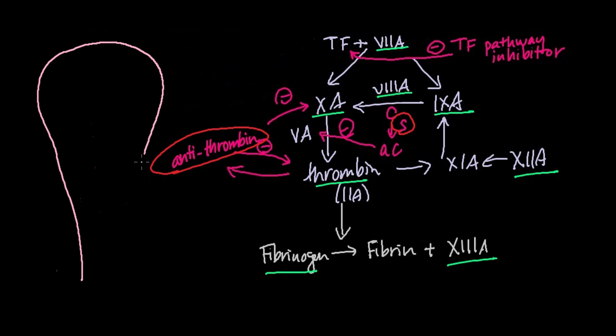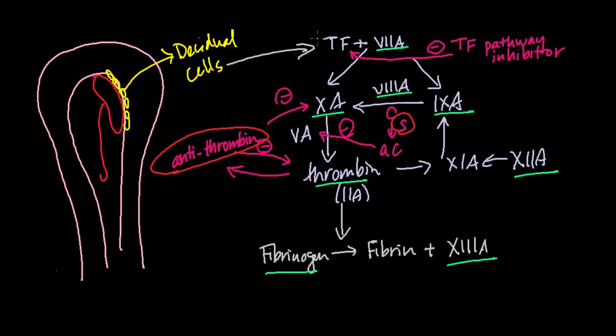In pregnancy, the placental bed plays a role. Decidual cells that line the placental bed strongly express tissue factor. When this is released at sites of decidual trauma, initiation of the coagulation cascade occurs.